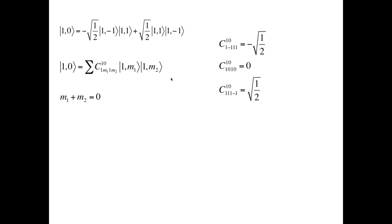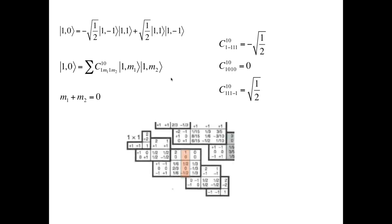Indeed, for M1 equal to minus 1 and M2 equal to 1, the coefficient is minus 1 over square root of 2. For M1 equals 0 and M2 equals 0, the coefficient is 0. And for M1 equals 1 and M2 equals minus 1, the coefficient is 1 over square root of 2.